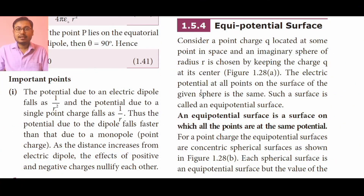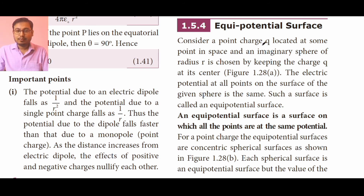Let us start today's class. In our today's class, we will see equipotential surface first. Consider a point charge q located at some point in space, and an imaginary sphere of radius r is chosen by keeping the charge q at its center, as given in figure 1.28. What it says is we have a point charge and it is in space, meaning there isn't any other charge near it.